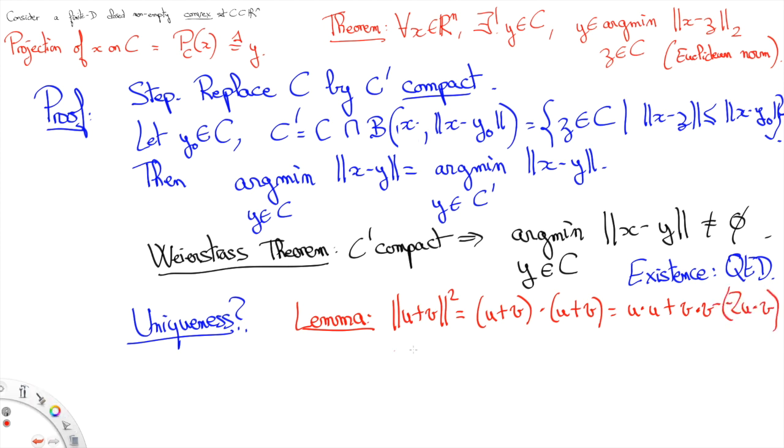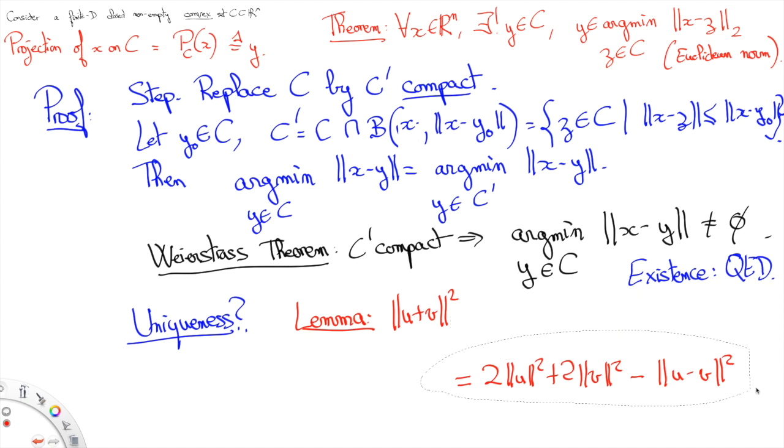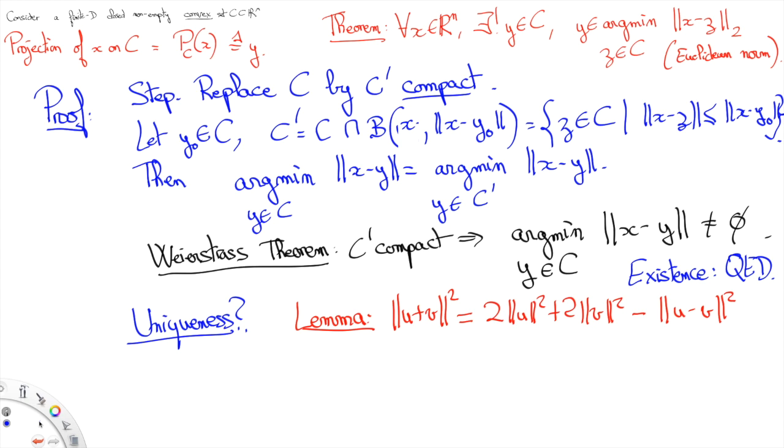And if we add U squared plus V squared to both sides we obtain 2U squared plus 2V squared minus U minus V squared. This can then be rewritten as 2U squared plus 2V squared minus the distance squared between U and V. So we have this equality that always holds for any two vectors in Euclidean space.